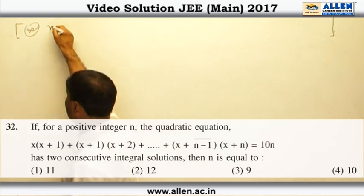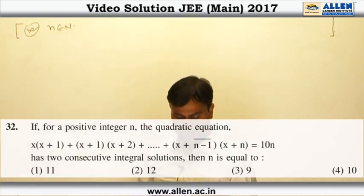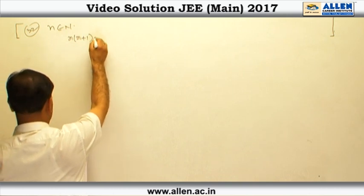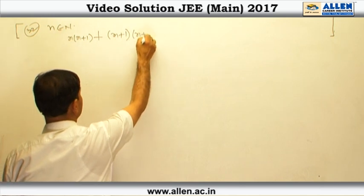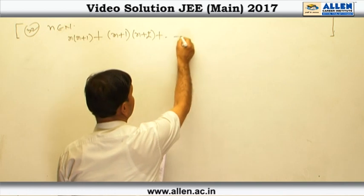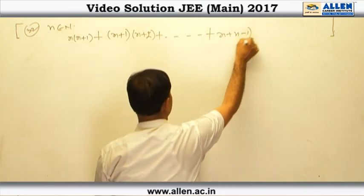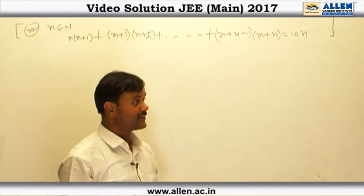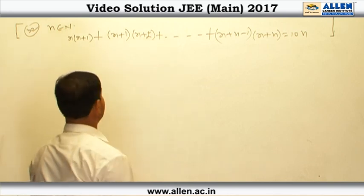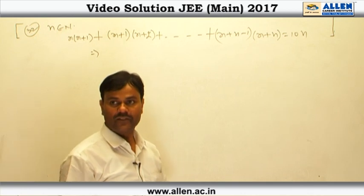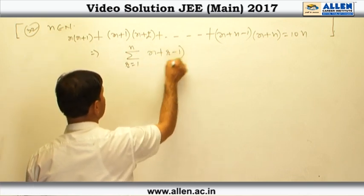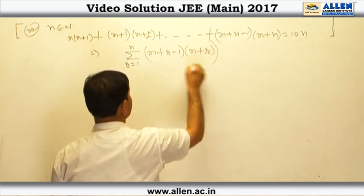Question 32. Here N is some positive integer and we are given a quadratic equation which has two positive integral solutions. The quadratic equation is X(X+1) + (X+1)(X+2) + … + (X+N−1)(X+N) = tan N. From the symmetry of terms, we can write this in summation form as: summation R from 1 to N of (X + R − 1)(X + R) = tan N.